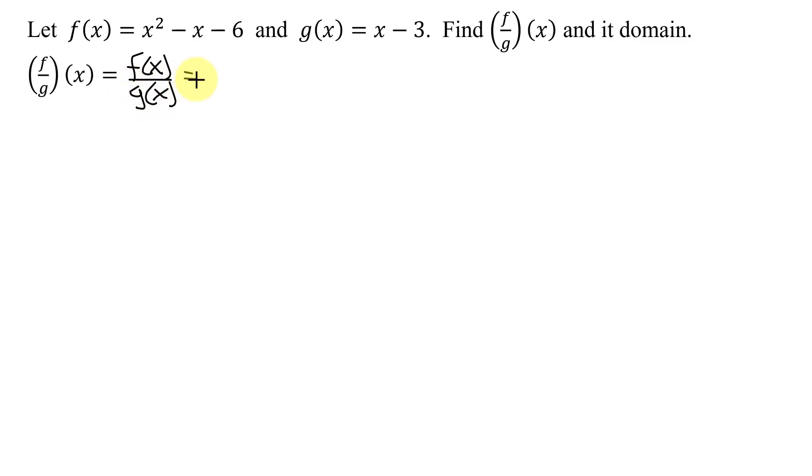What was f(x)? It was given as x squared minus x minus 6. So I have x squared minus x minus 6 all divided by g(x), which is x minus 3.